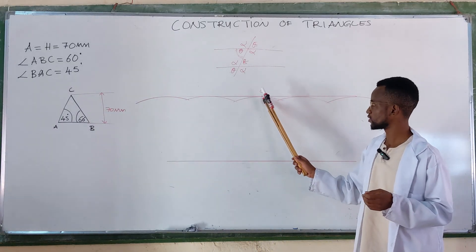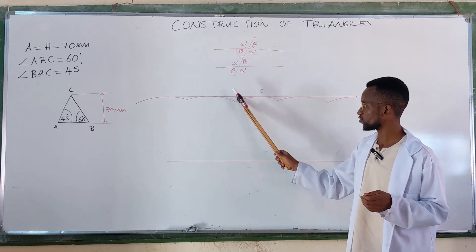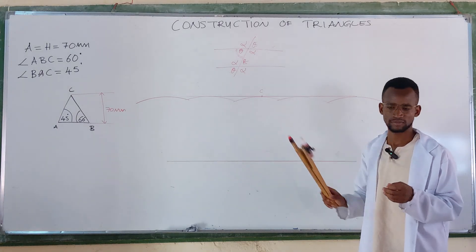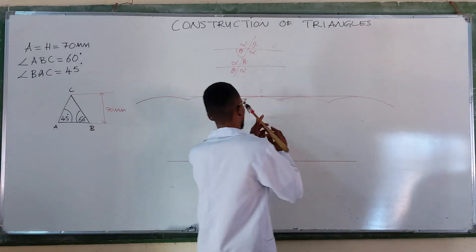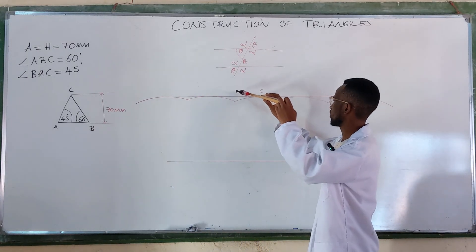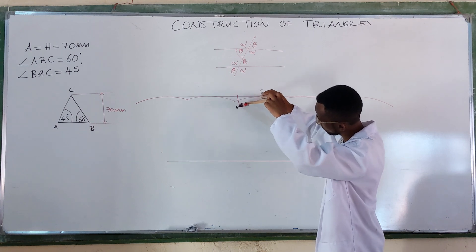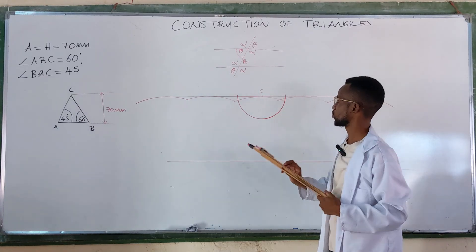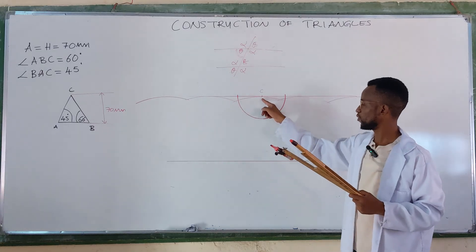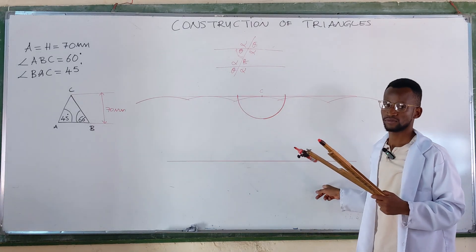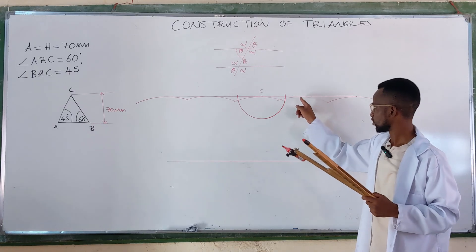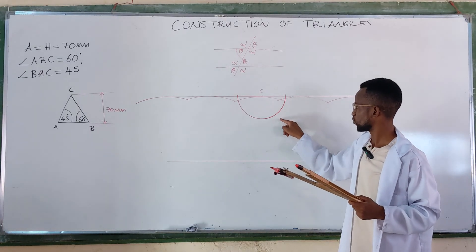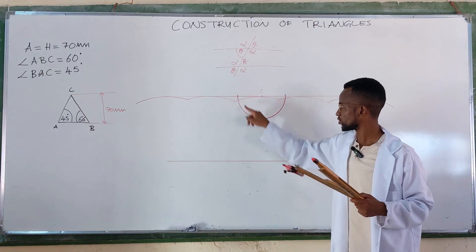You go to point C and construct a line at angle 45 from here — let this be your zero, then 45 from point C. Get your compass, open it to any convenient radius, and strike an arc. From the same point, this side you construct angle 45, and from this side you construct angle 60. Maybe we can start with angle 60 from here — angle 60 on one side, angle 45 on the other side. And then you draw.